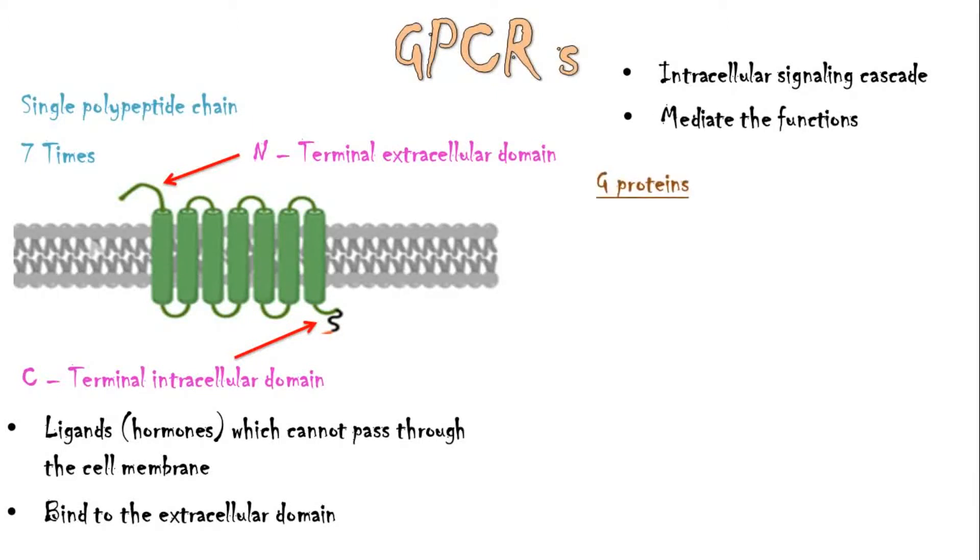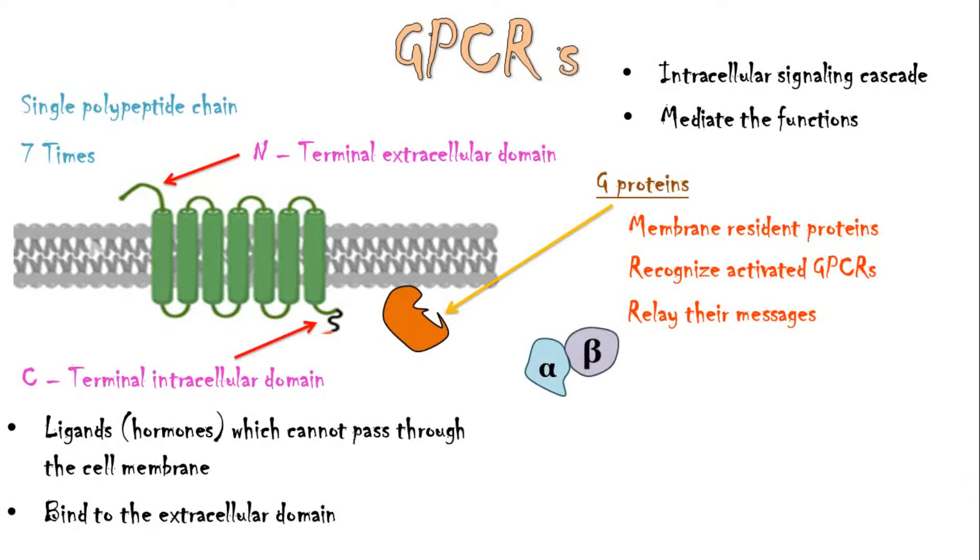G-proteins are a group of membrane-resident proteins which recognize the activated GPCRs and relay their messages in order to elicit the cellular effects of the ligand. G-protein consists of three subunits: alpha, beta, and gamma. The gamma subunit is anchored to the plasma membrane via a fatty acid chain.